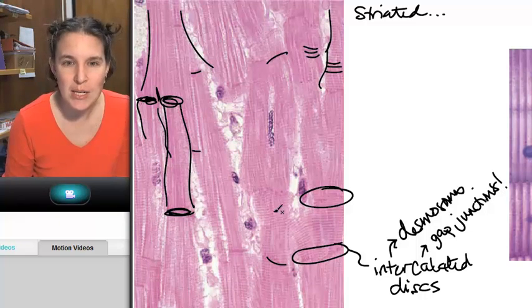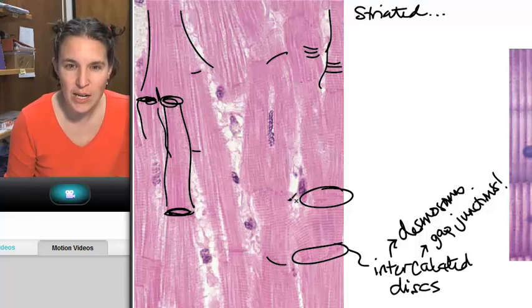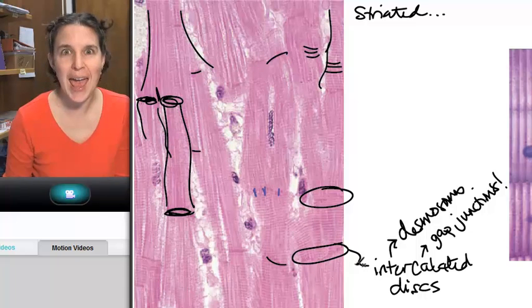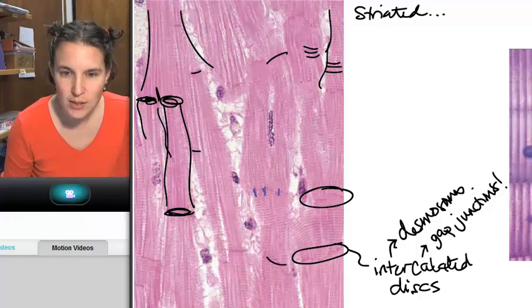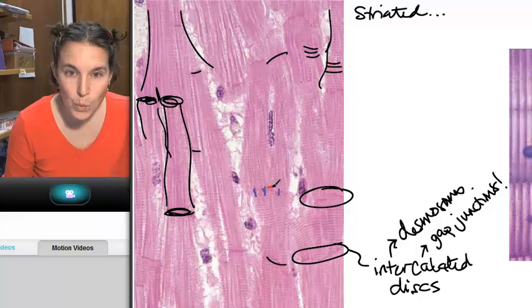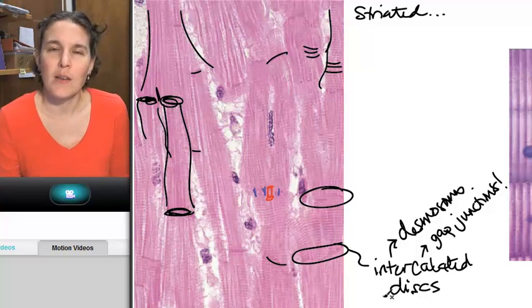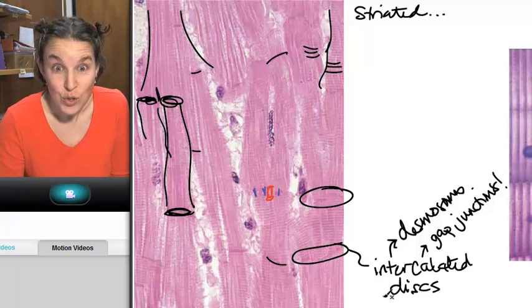Look, I'm going to take a fresh intercalated disc right here and I'm going to draw a desmosome and a gap junction. That's supposed to be a gap junction. It looks like a tunnel.